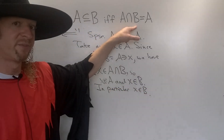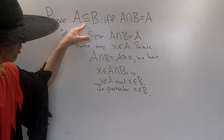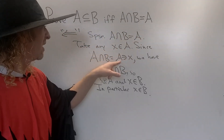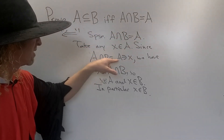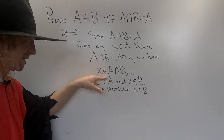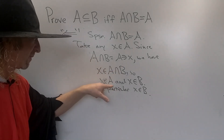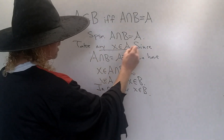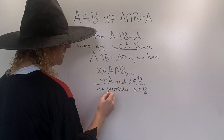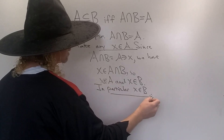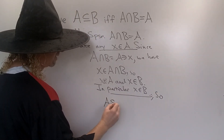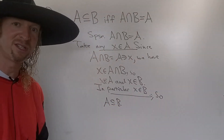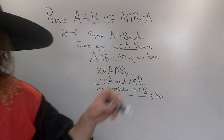So: we assumed A ∩ B = A, we took any element x in A, and since A ∩ B = A, x is in the intersection, and in particular x is in B. We started with x in A and showed it's in B, so A is a subset of B. That completes the proof — we've shown both directions.